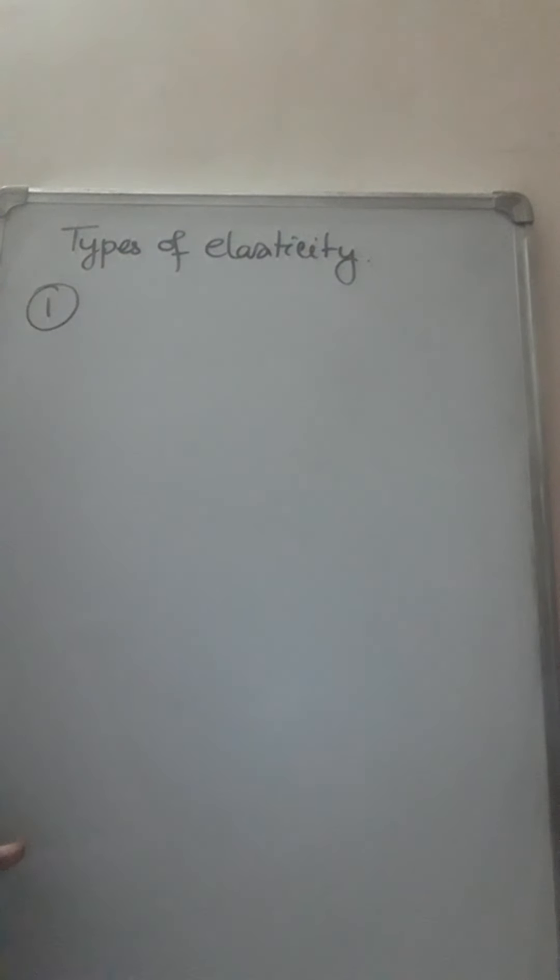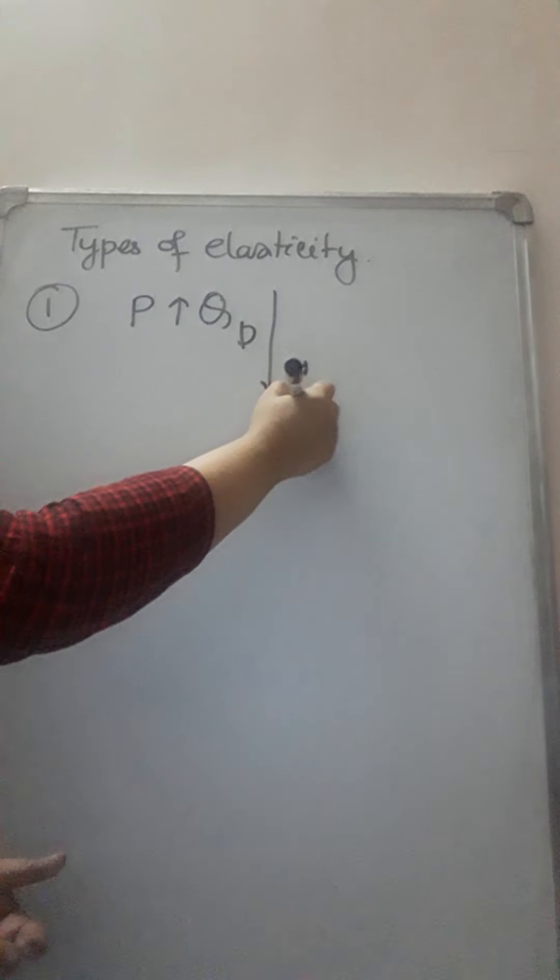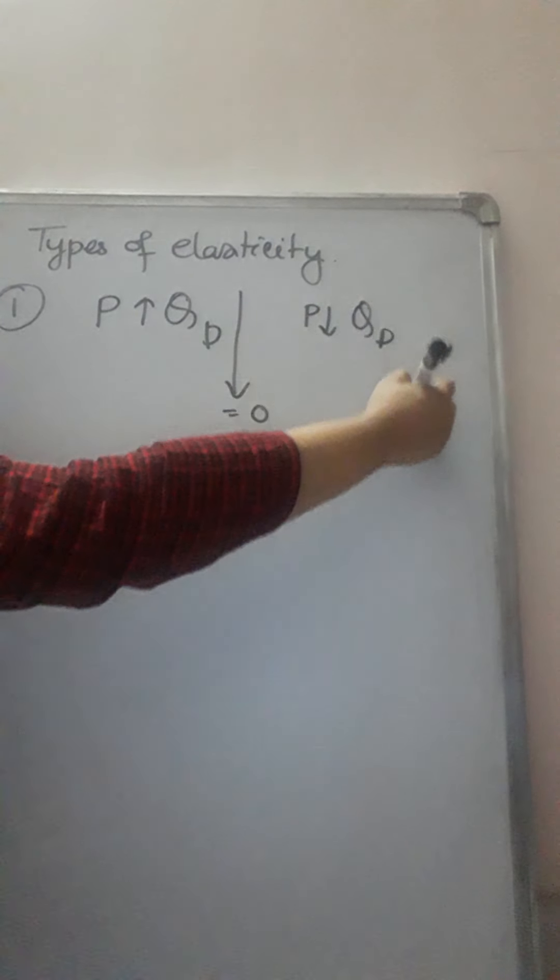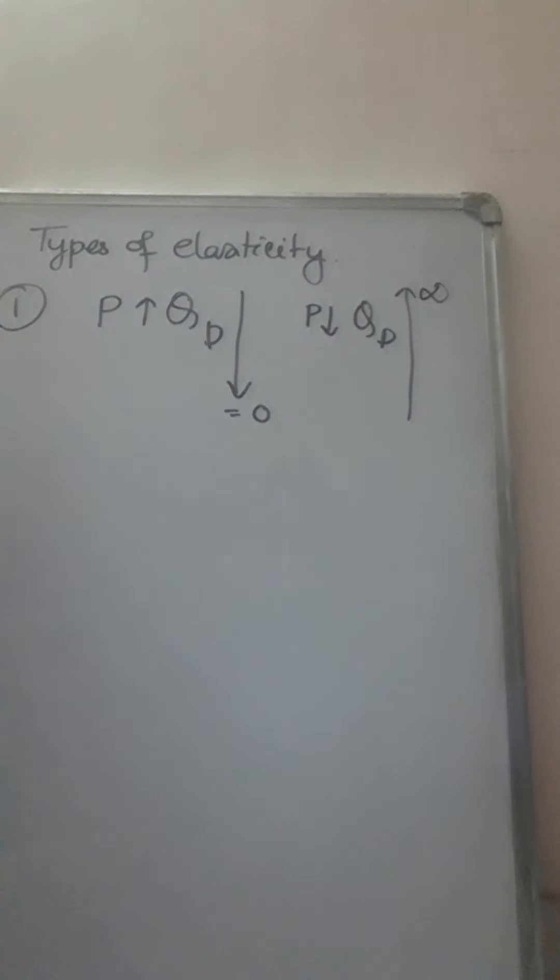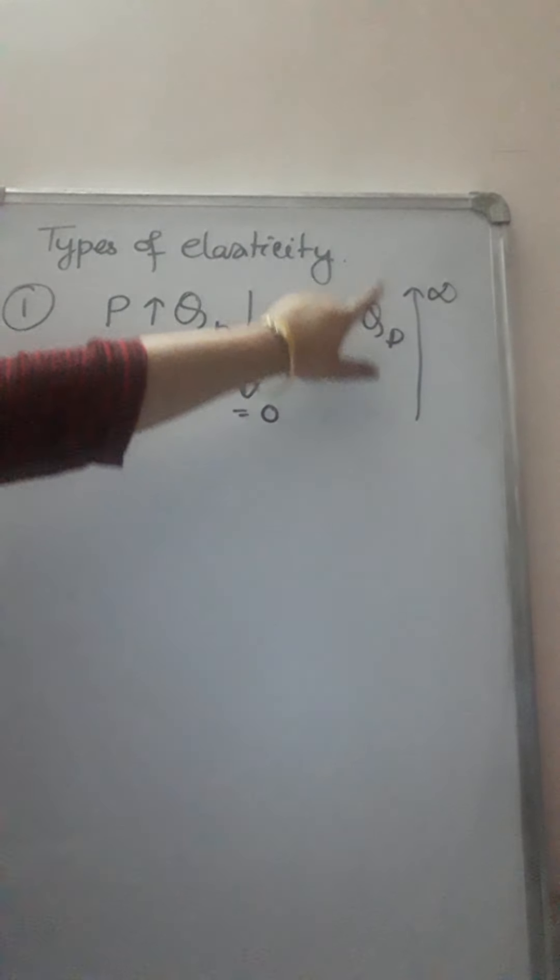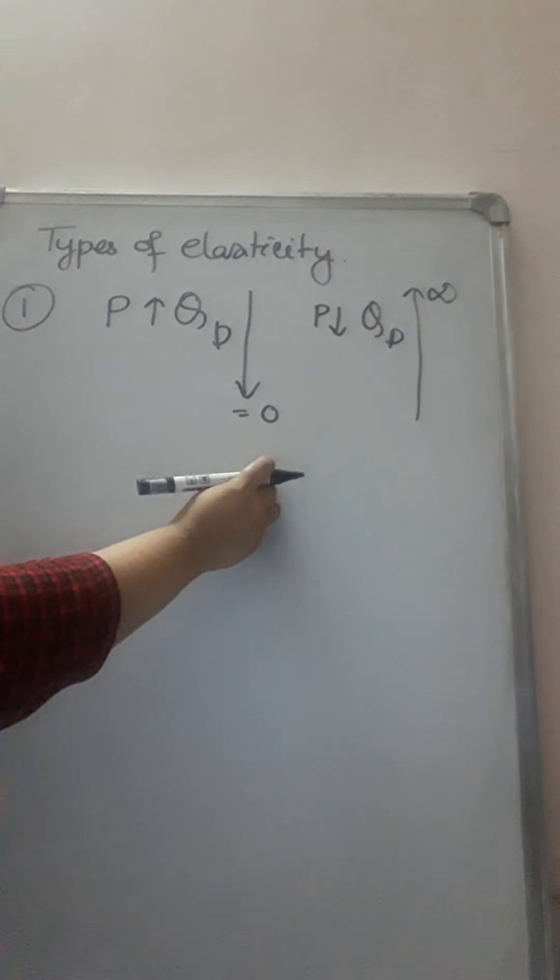Case number 1: Perfectly elastic. Now what I have written here, suppose the law of demand is operating. With price rise there has been reduction in demand and with price fall there has been increase in demand. But due to a small percentage change in price, the demand has dropped to as low as 0.